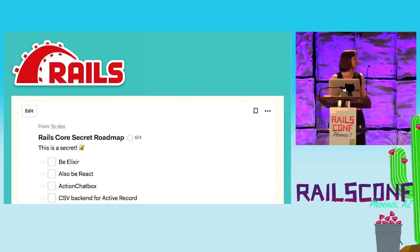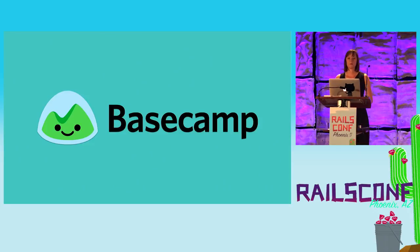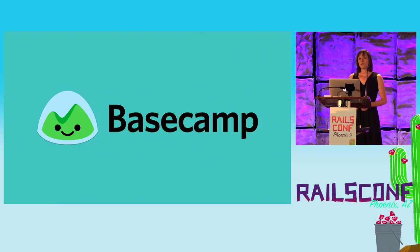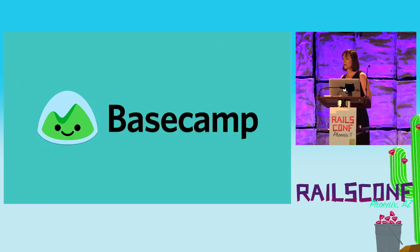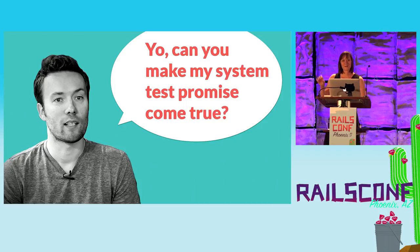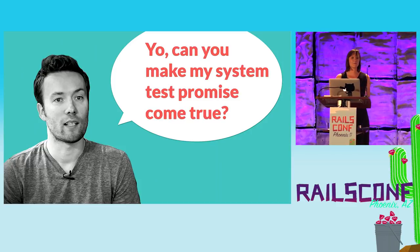Prior to working at GitHub, I was a programmer at Basecamp. When we were building Basecamp 3, we decided to add system testing through Capybara. I saw firsthand the amount of work it took to get system testing running in our application — and this was a major catalyst for getting system tests into Rails 5.1. This past August, David asked me if I would be interested in getting Capybara integration into Rails 5.1. Most of my work on Rails had been performance improvements, refactorings, or bug fixes, so I was really excited to work on a brand new feature for the framework.